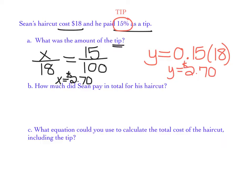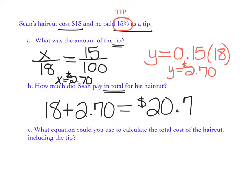Now we want to know how much Sean paid in total for his haircut. Well, we have to take the amount that he paid and then we have to add the amount that he tipped on top of that. And when I do that, I have 18 plus 2.70, and I get a total of $20.70.